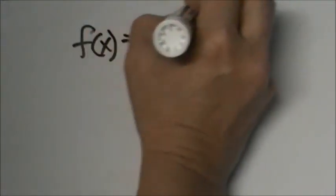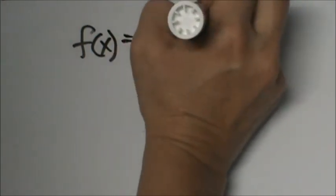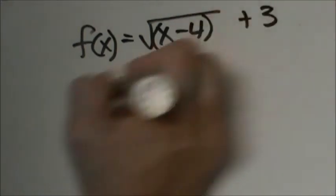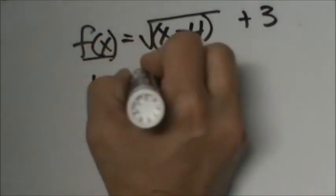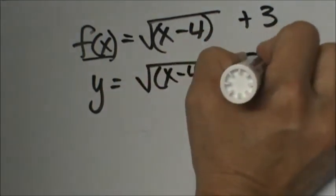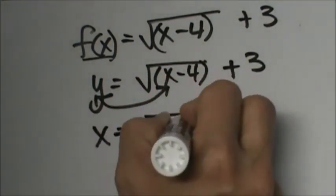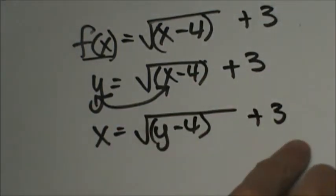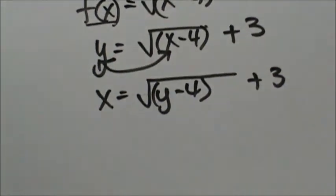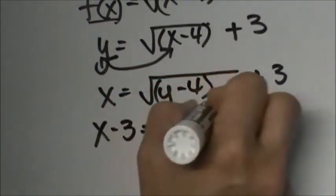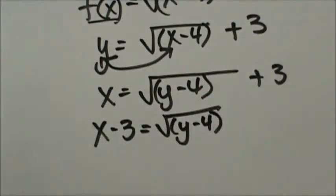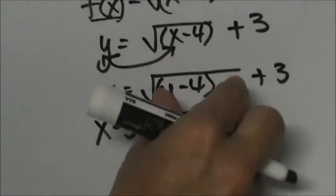This time we're given something a little different — a square root. f(x) is equal to the square root of (x minus 4), all under the radical, plus 3. Remember the steps: replace f(x) with y, then switch positions with x and y. So x equals the square root of (y minus 4) plus 3. To get y by itself, move the 3 first by subtracting 3 from both sides, leaving x minus 3 equals the square root of (y minus 4).